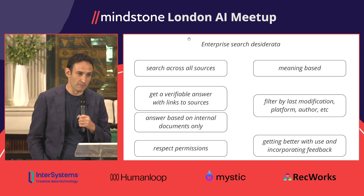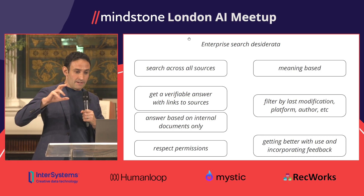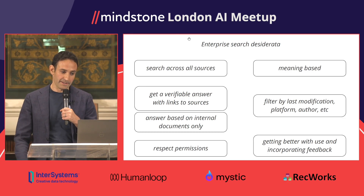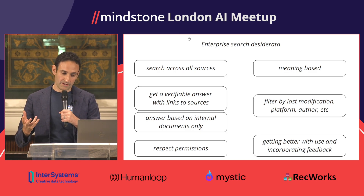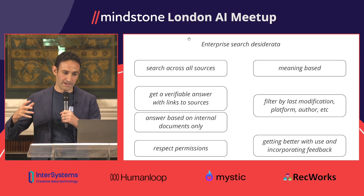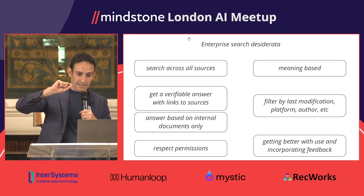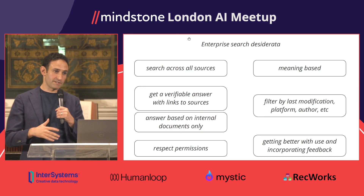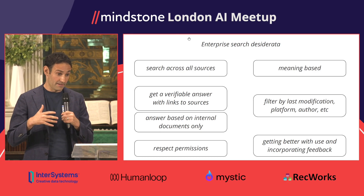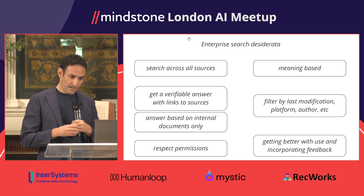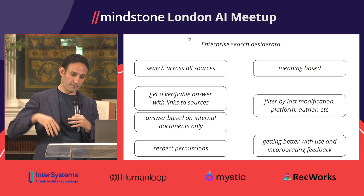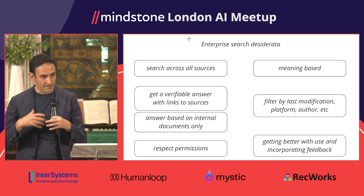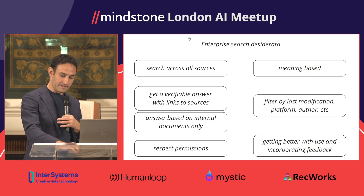Enterprise search is somewhat different from what ChatGPT or Google provides. First, it's over internal data sources and you need unified search across those sources. You'd want verifiable answers — there's no way you'd accept an answer you cannot check, or where ChatGPT hallucinated. It must be based on internal documents only and must respect permissions. It would be nice if it were meaning-based, supported traditional filters like date, source, or author, and got better the more you use it with explicit feedback.